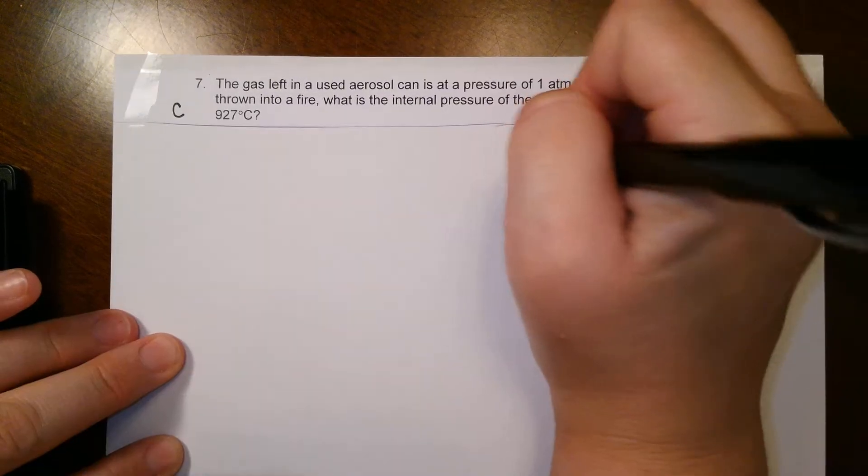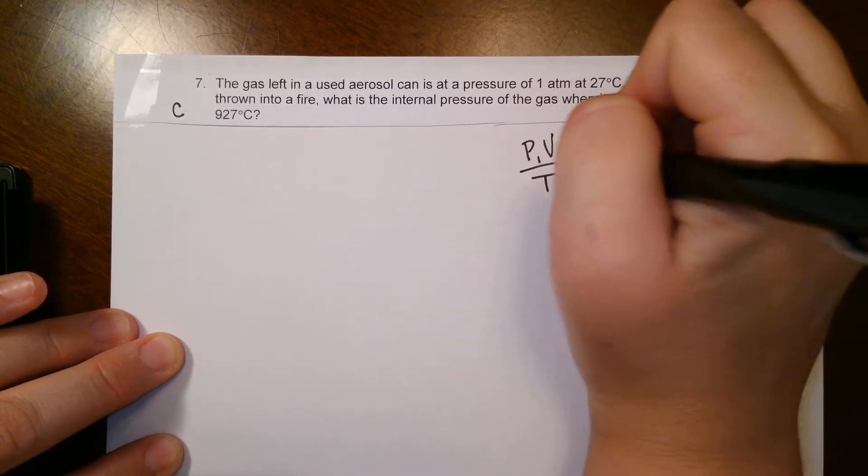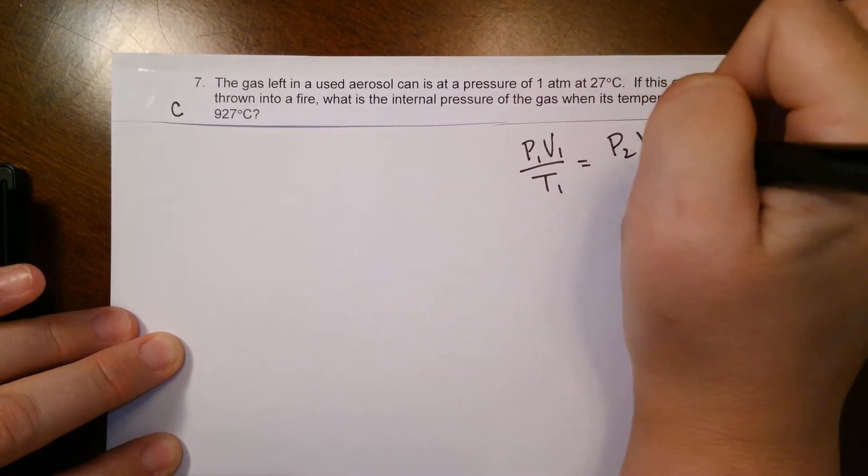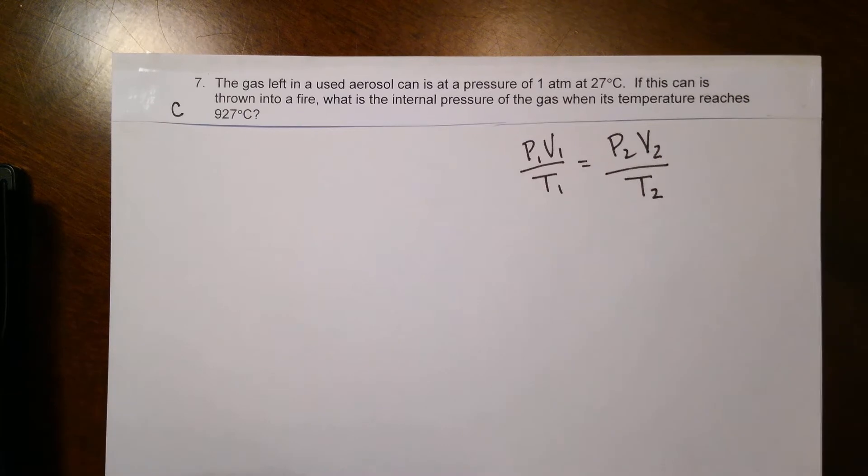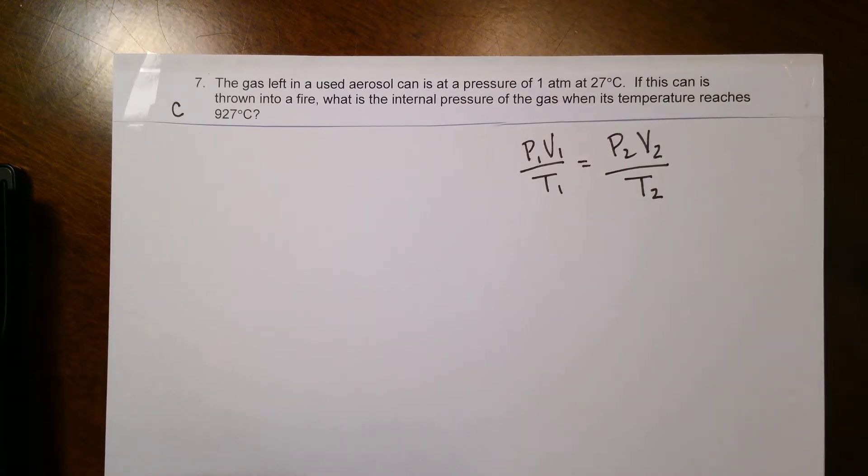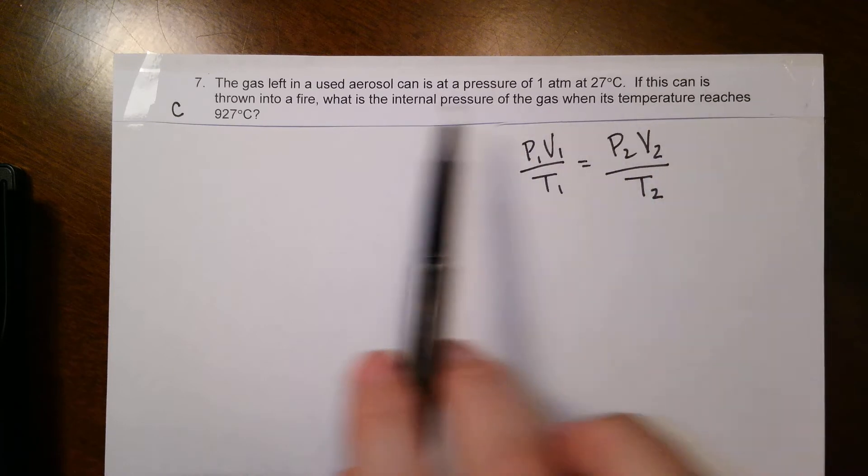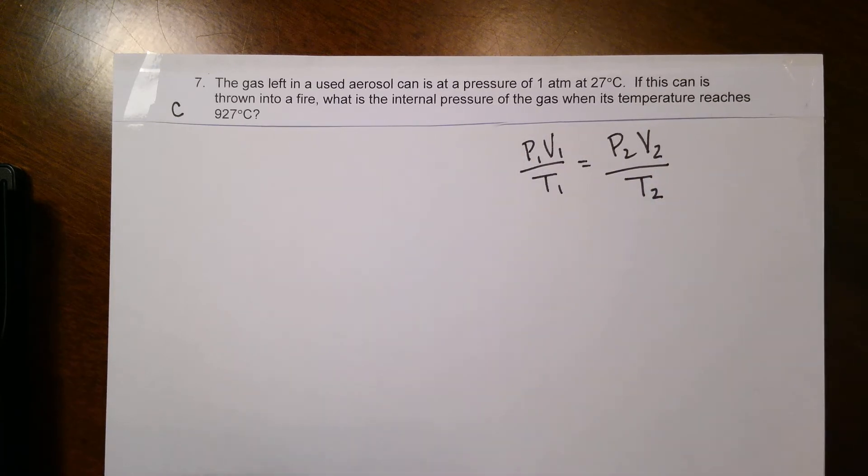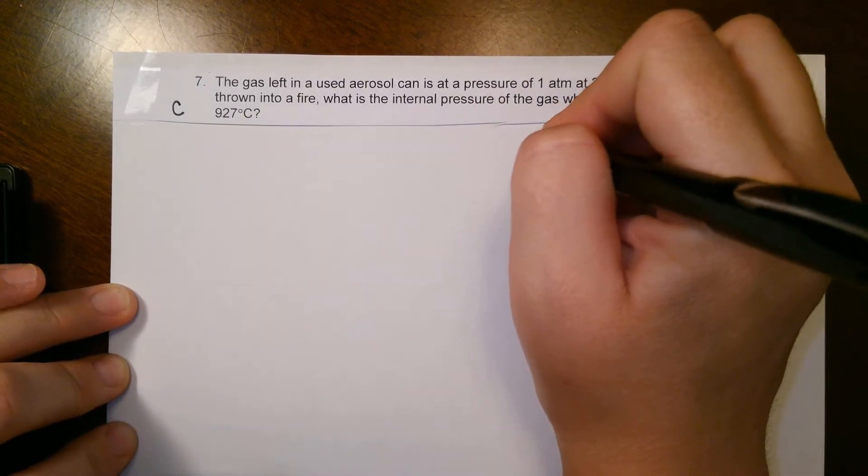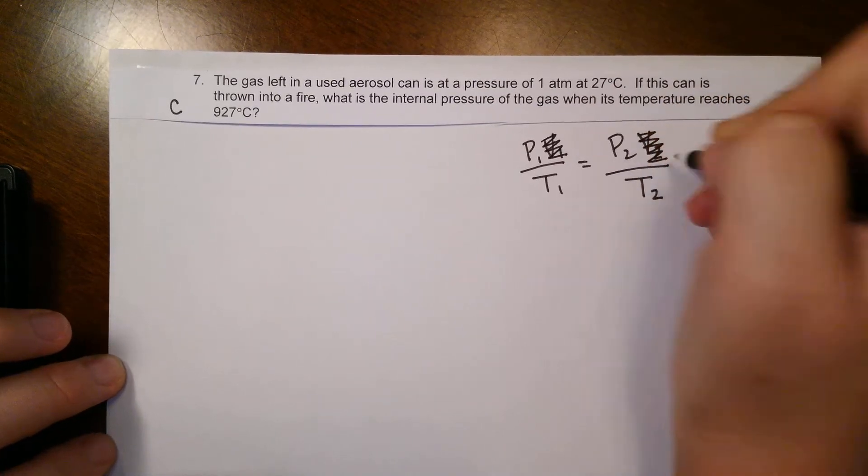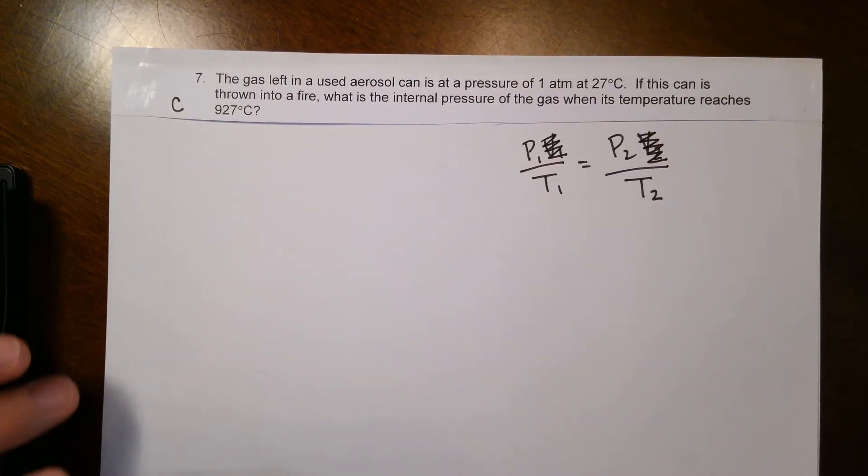Keep in mind we are always using that combined gas law for this part of the worksheet. If it's never mentioned you can assume it to be constant. At no point does this say the actual volume of the gas can, plus we know everything in this problem is happening within that gas can, so it's constant and we're gonna assume that it does not matter. So we're gonna cross out that variable, just looking for the pressures and the temperatures.